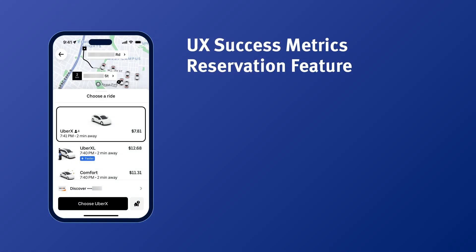Imagine we're still working on the ride-sharing app, but now we're focusing on a new feature we're launching. This feature allows users not only to book a ride in real time, but also to reserve a ride in advance. One success metric we'd track is the adoption rate — how many users started using this feature within a given time frame — which tells us if we effectively solved the user need and if users are able to discover and navigate it.